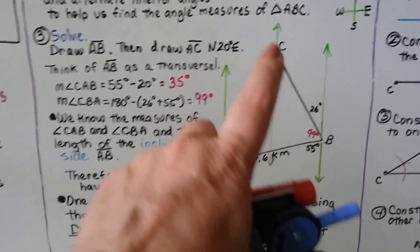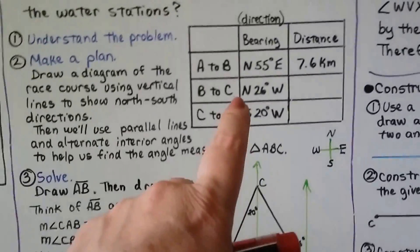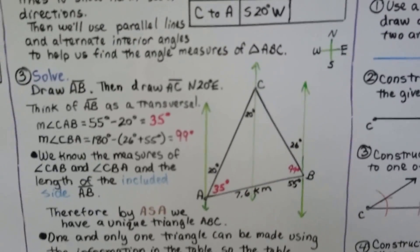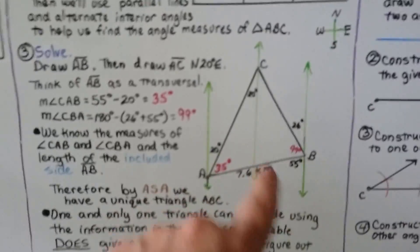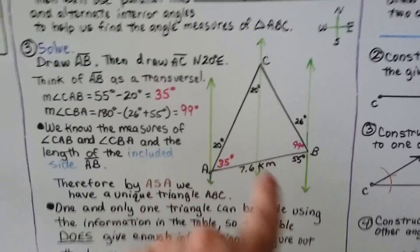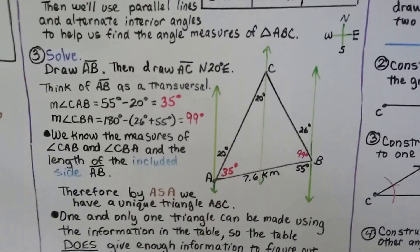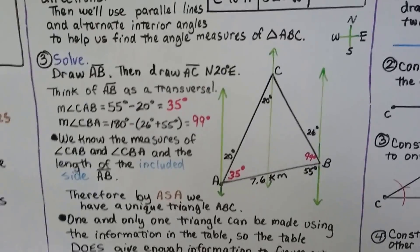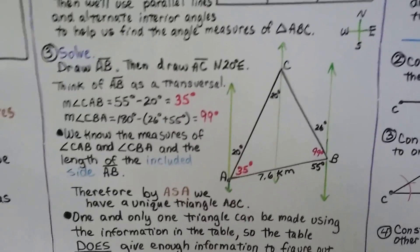On this side, once we connected C to B, it says from B to C is 26 degrees. And if we've got 55 degrees and 26 degrees, this whole thing should total 180 degrees. So we do 180 degrees minus the 26 degrees added to the 55 degrees, and we get 99 degrees. So now we know this interior angle for our triangle is 99 degrees.